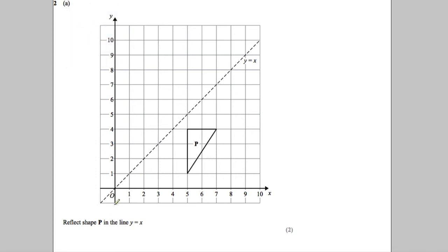Okay, in this question we're given the line y is equal to x, we have a triangle P and we're asked to reflect the shape P in the line y equals x. Now I'm going to show you two ways to do it, whichever way you prefer.